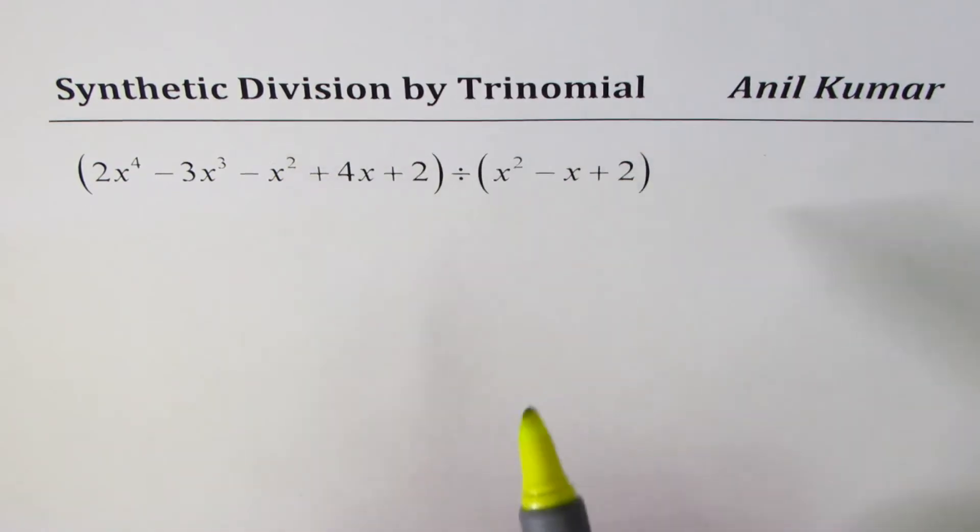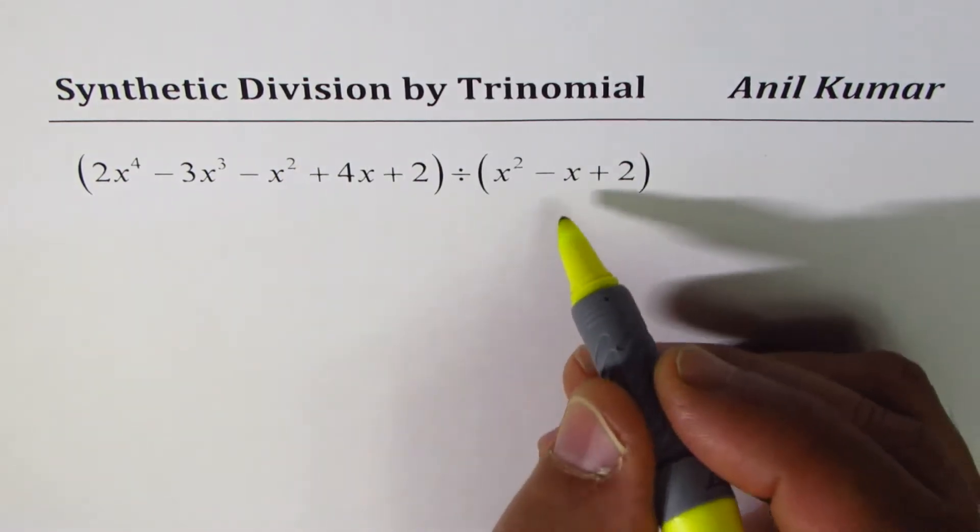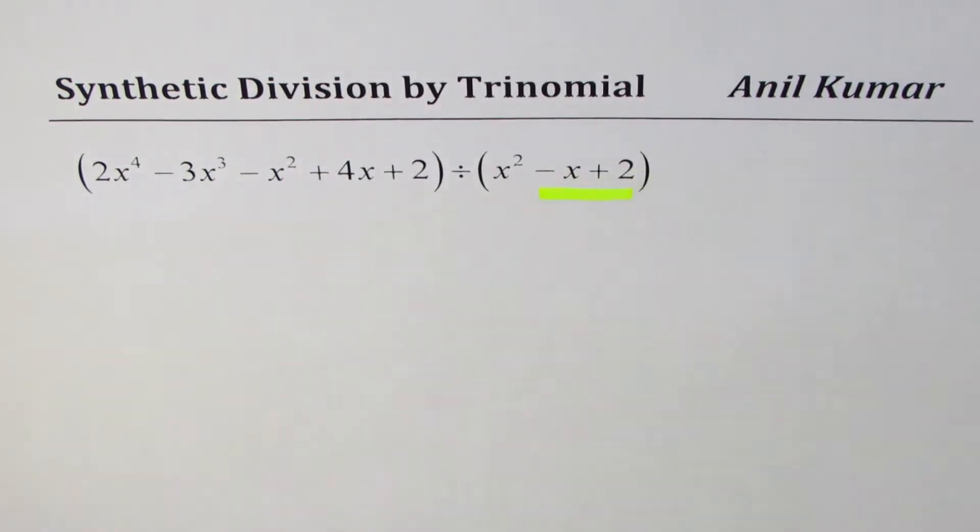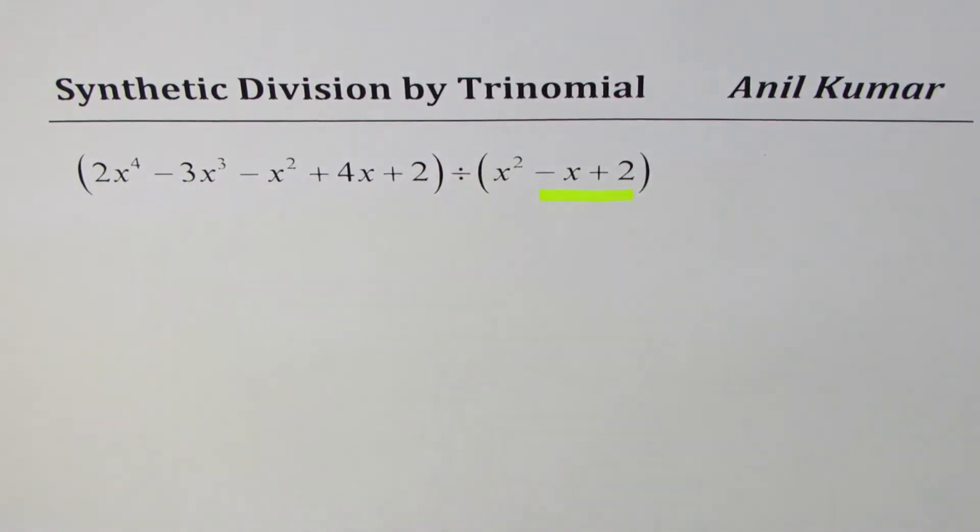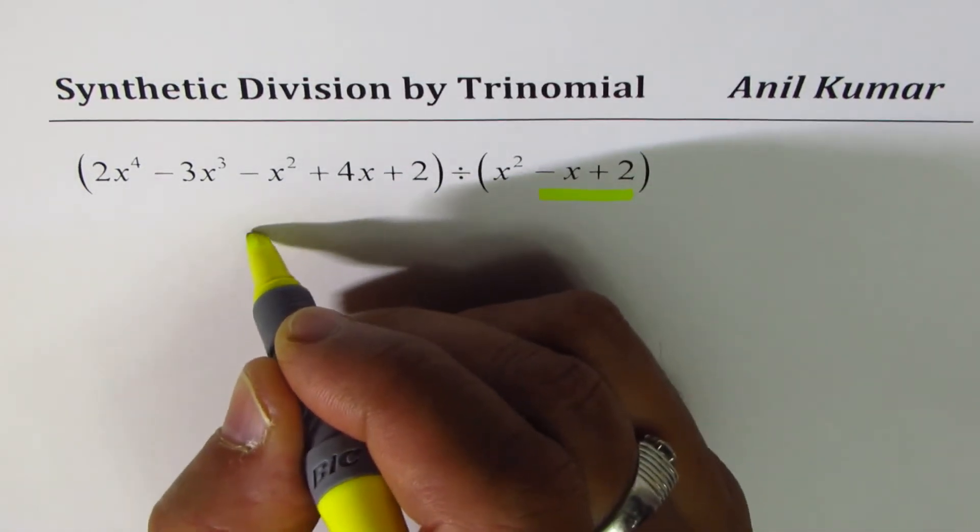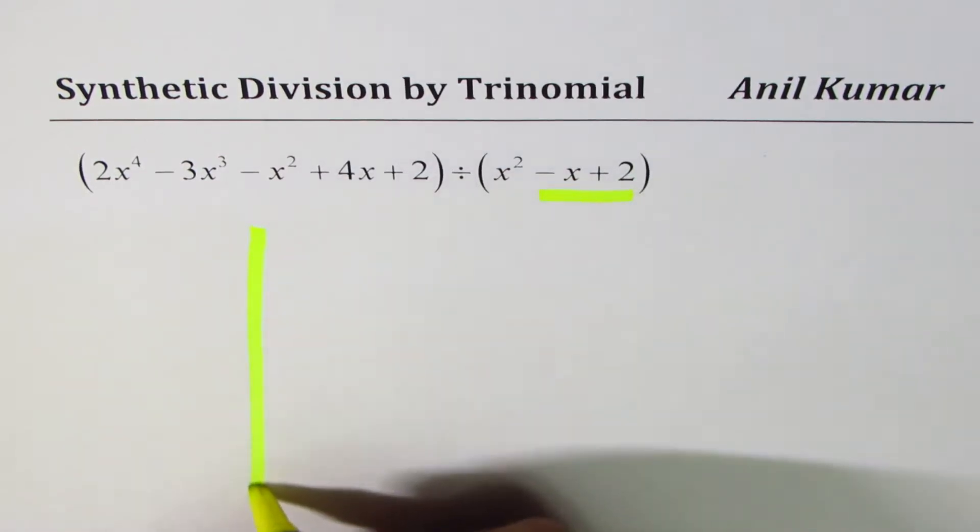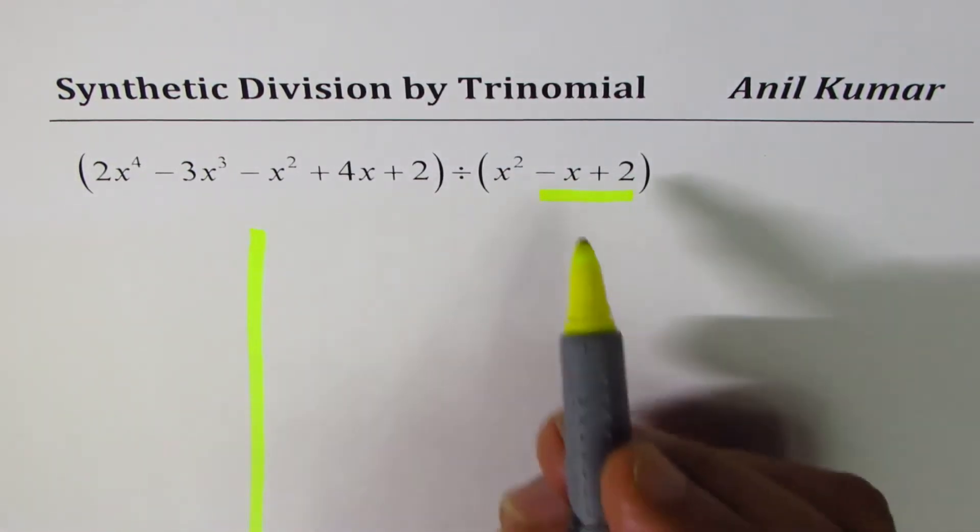Normally we had been doing synthetic division with only linear factors, right? Now this time we have introduced x square also, so that means we have an additional layer which goes in parallel while dividing. We'll modify the process which we had learned earlier a bit to incorporate a trinomial.